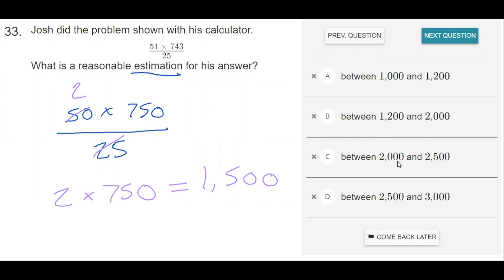If we look at our answer choices, 1,500 falls between 1,200 and 2,000. So a reasonable estimation for this answer is between those two values.